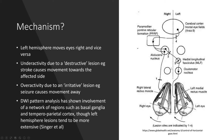Depending on the lesion type, underactivity due to a destructive lesion such as a stroke causes eye movement towards the affected side, while overactivity due to an irritative lesion such as a seizure causes movement away from the affected side.